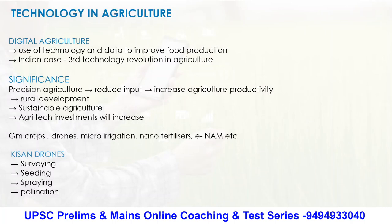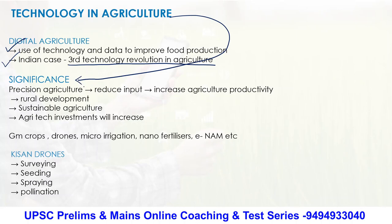Now coming to technology in agriculture, which is what the news is all about. We are concerned about high technological advancement in agriculture. The use of technology and data to improve food production is one thing India is concentrating on — this is the third technological revolution in agriculture. If we have technology in agriculture, firstly you will have precision in agriculture, which will lead to reduced input costs, and if input costs are reduced, there will be more productivity and increased agricultural income.